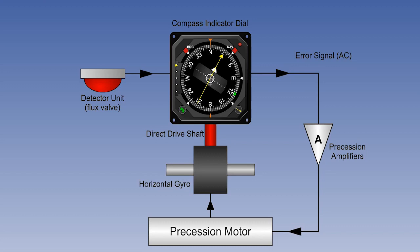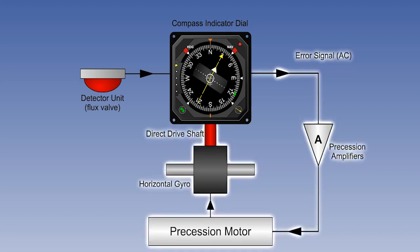If, in fact, there is some gyro drift during the turn, on completion of the turn there will be a small error signal. This will be taken out, as described in the previous scene.